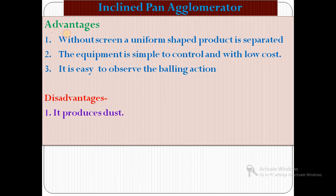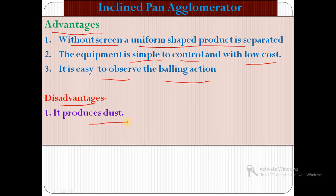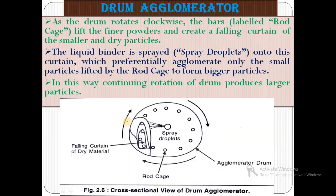The advantages of the inclined pan agglomerator are: first, a uniform-shaped product is separated without a screen; second, the equipment is very simple to control and has a very low cost; and third, it is easy to observe the balling action. One disadvantage is that it produces dust particles.